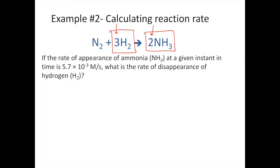Qualitatively speaking, if the rate of appearance of ammonia is 5.7 × 10⁻³ molar per second, I predict the rate of disappearance of hydrogen will be a larger value because hydrogen is being used up more quickly than ammonia is being made. Let's do the math and see if this checks out.